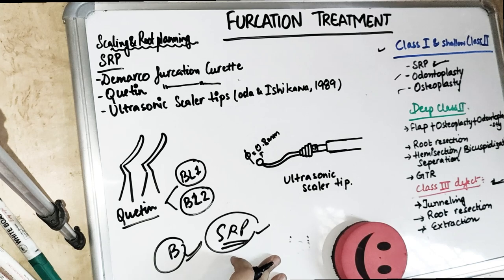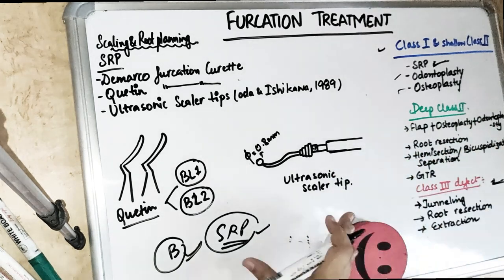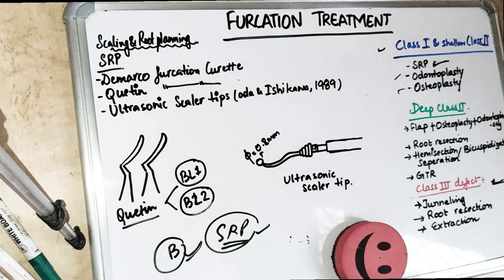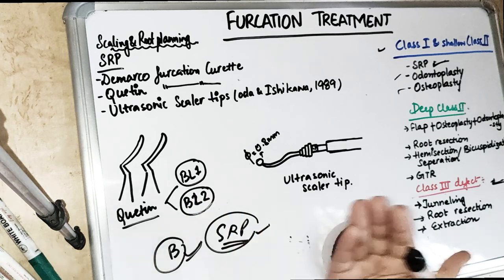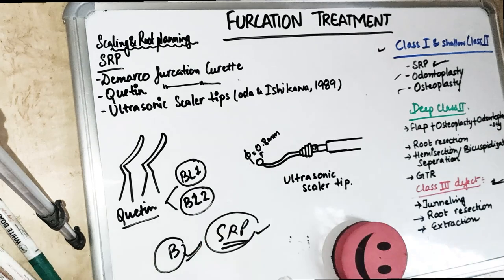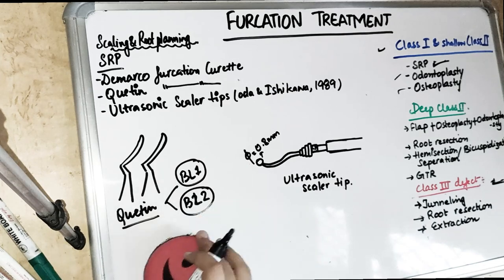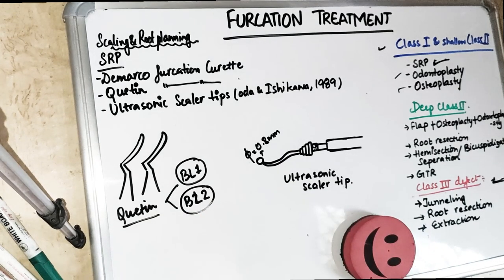For deep Grade 2, as well as Grade 3 or Grade 4 furcation, we have to do it surgically, because otherwise there is no other option to treat these furcations as they are so intense and so deep. Scaling and root planing is a non-surgical approach, and there is an obliteration of the furcation area.